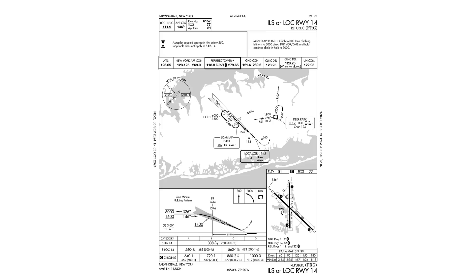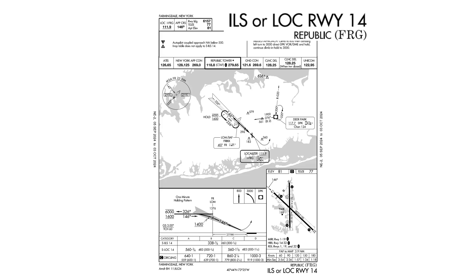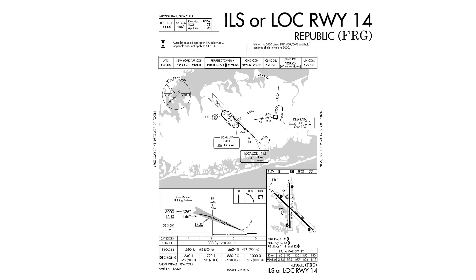First and foremost, we have the approach name. This is the ILS OR Localizer to Runway 1-4 at Republic, Farmingdale, NY. The 'OR' means that we use this plate whether we're flying the precision ILS approach or the non-precision localizer approach.